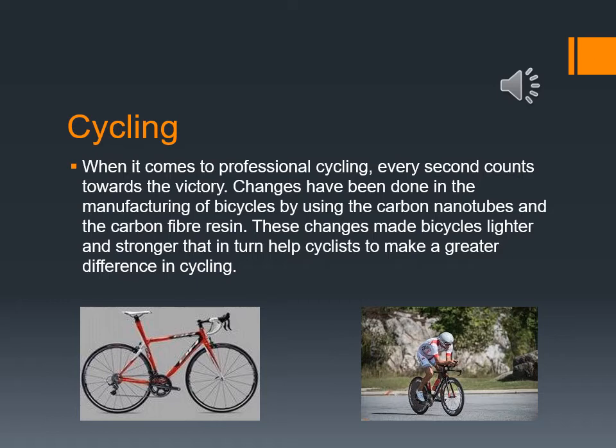When it comes to professional cycling, every second counts towards victory. Changes have been made in the manufacturing of bicycles by using carbon nanotubes and carbon fiber resin. These advances made bicycles lighter and stronger, which in turn helps cyclists make a greater difference in cycling performance.